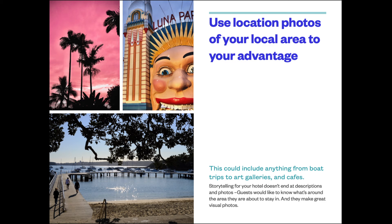Use location photos of your local area to your advantage. This could include anything from boat trips to art galleries and cafes. Storytelling for your hotel doesn't end at descriptions and property photos — guests want to know what's around the area. The top image was a sunset at the InterCon Sanctuary Cove, then Luna Park near Dalziel Lodge and Glenferry Lodge, and Balmoral Beach near the Albert Mossman. For location shots, all you need to know is the rule of thirds — a composition guideline that places your subject in the left or right third of an image, leaving the other two thirds more open. It generally leads to compelling, well-composed shots.